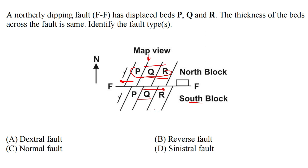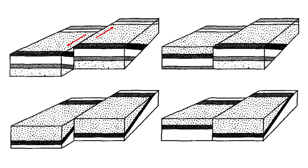This type of fault is called a sinistral strike-slip fault. We can find that as option D in this question. If it were dextral, the beds would have shifted towards the right — so it's clearly a sinistral fault.